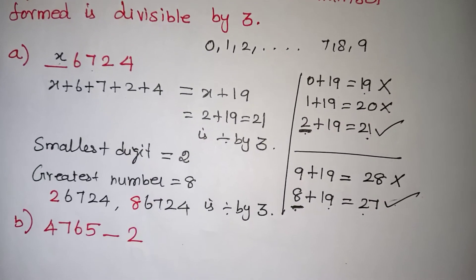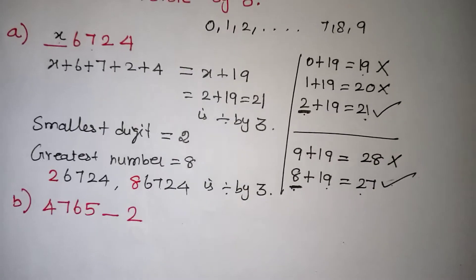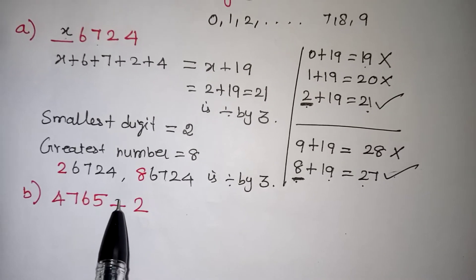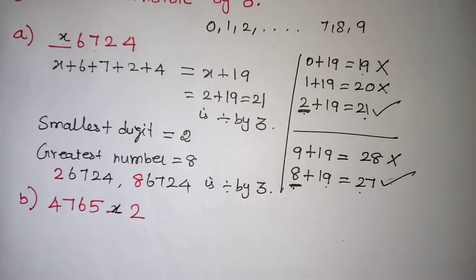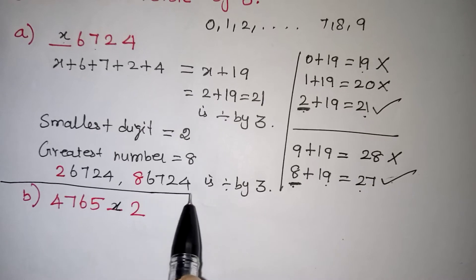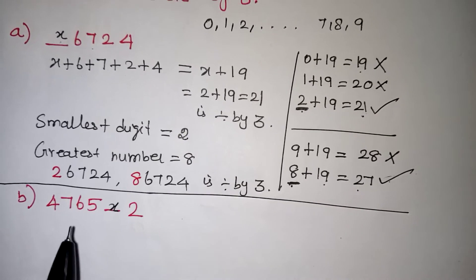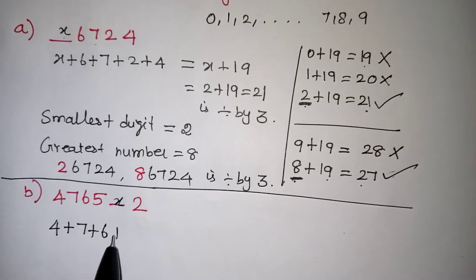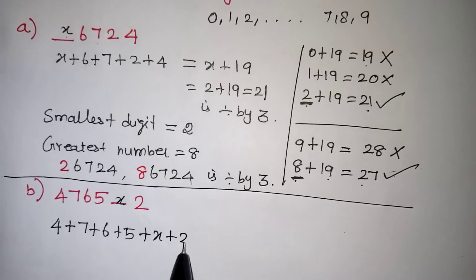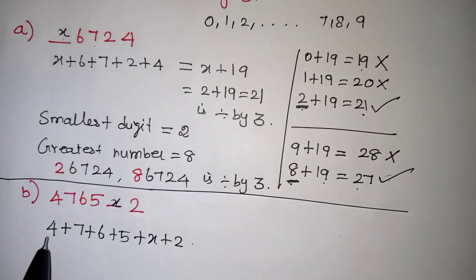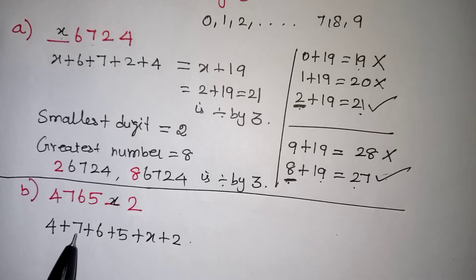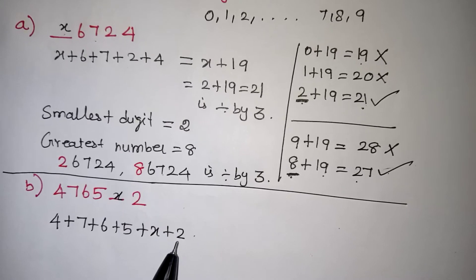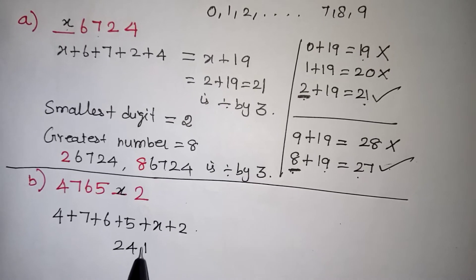We will move on to the next problem now. The question is 4, 7, 6, 5, blank, 2 — the blank place we don't know, so let us take it as x. We are going for the divisibility rule of 3: the sum of the digits should come in the 3 table. So we add all numbers: 4 plus 7 plus 6 plus 5 plus x plus 2. That gives us 4 plus 7 is 11, plus 6 is 17, plus 5 is 22, plus 2 is 24. So we are getting 24 plus x.